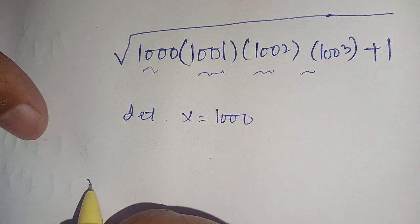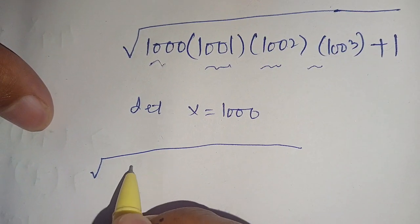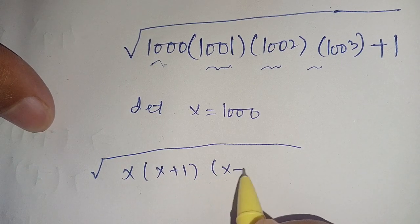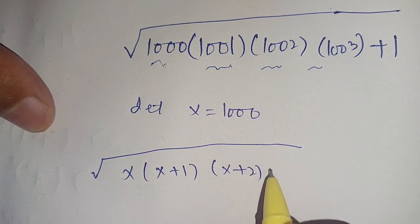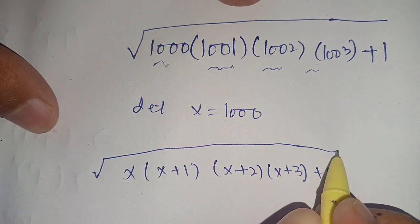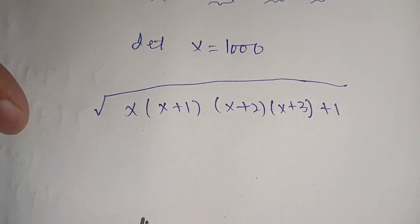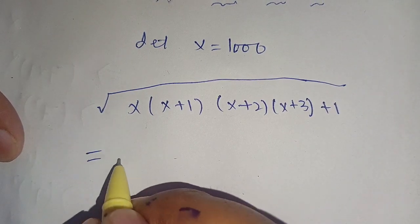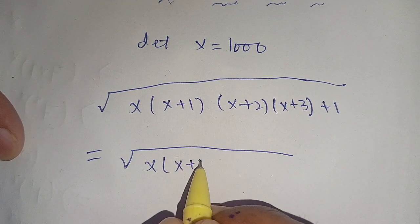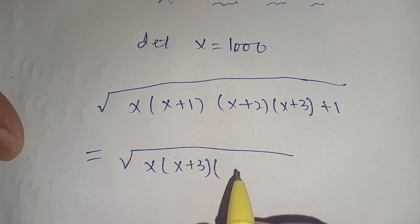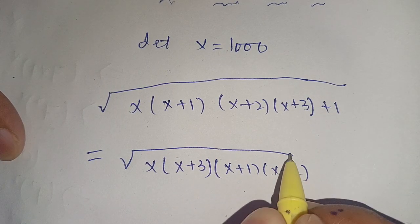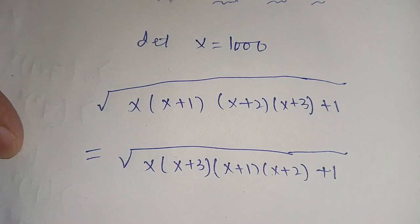This will become the square root of x times (x+1) times (x+2) times (x+3) plus 1. In the next step we can rewrite it as the square root of x times (x+3) times (x+1) times (x+2), plus 1 as it is.